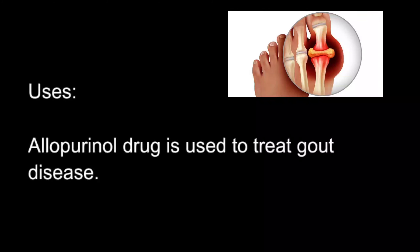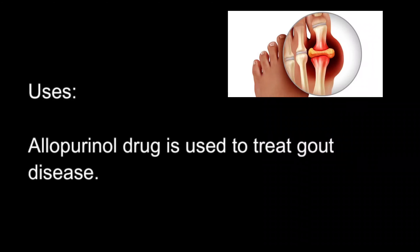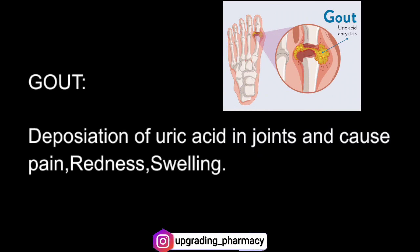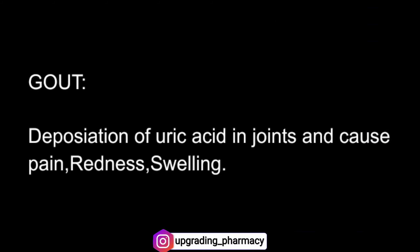Allopurinol drug is used for the treatment of gout. Gout is caused by deposition of uric acid in the joints and causes pain, redness, and swelling. Swelling is an excessive fluid content trapped in body tissue.